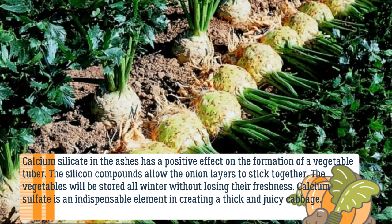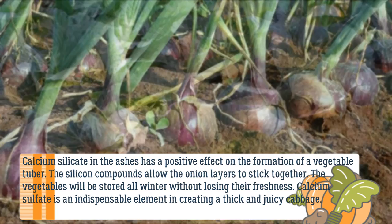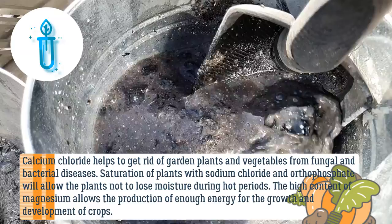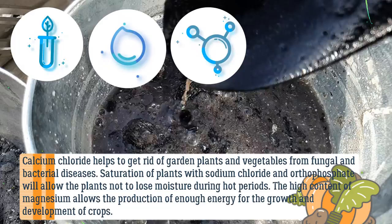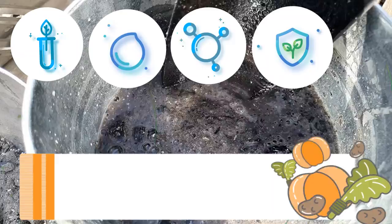Calcium sulfate is an indispensable element in creating thick and juicy cabbage. Calcium chloride helps rid garden plants and vegetables of fungal and bacterial diseases. Saturation of plants with sodium chloride and orthophosphate allows them not to lose moisture during hot periods. The high content of magnesium allows production of enough energy for the growth and development of crops.